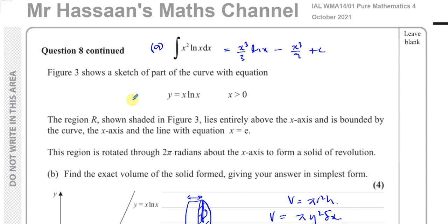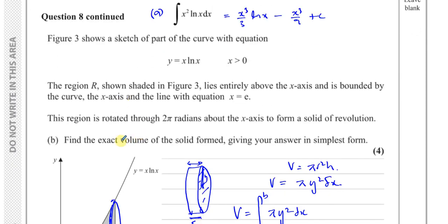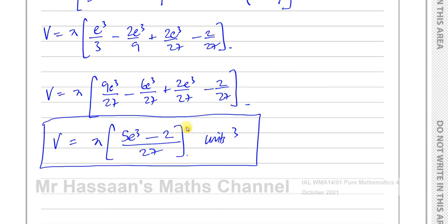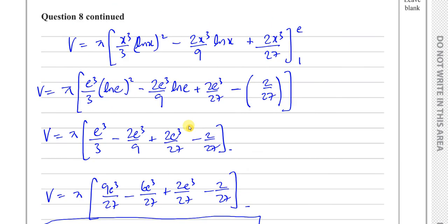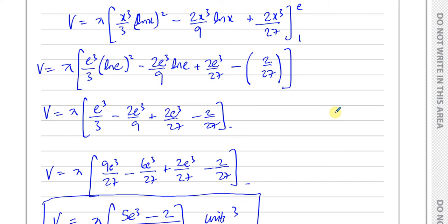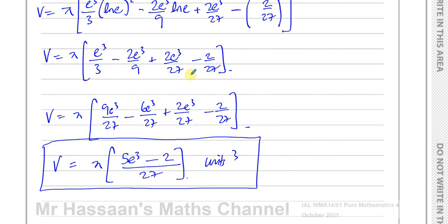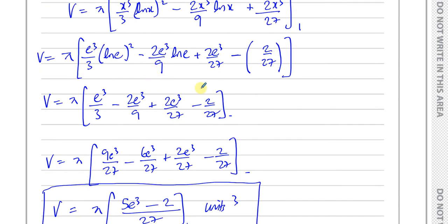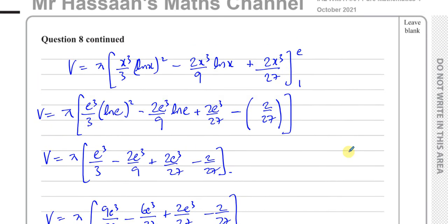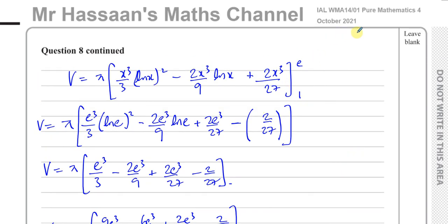They wanted the answer in simplest form and said exact, so it should be in terms of e — and there's the answer to that question. I hope that was clear. It's a bit of a long-winded one, but you have to do a lot of this kind of manipulation at the end. Thank you for watching.